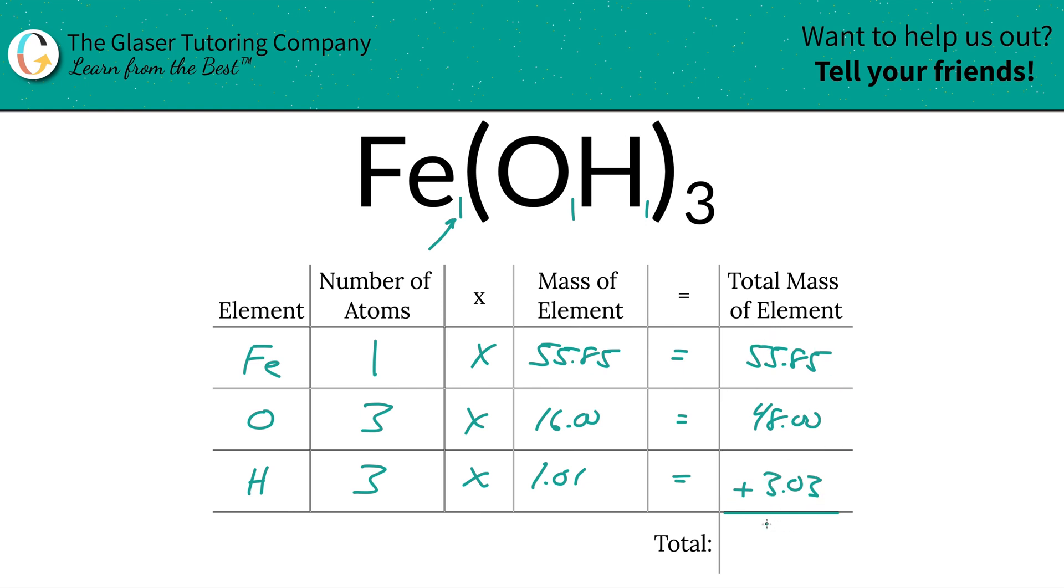...we're going to sum this particular column up. Right, isn't that so simple? So this is 106.88, and since we're solving for molecular mass, the units here are in terms of amu, atomic mass units. And that's all there is to it.